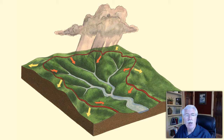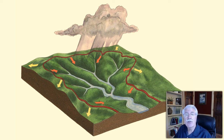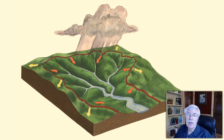The streams combine with other streams to form rivers. The area drained to form the river may also be called a river basin, in addition to being called a watershed. The river basin is the land drained by a river and all of its tributary streams.